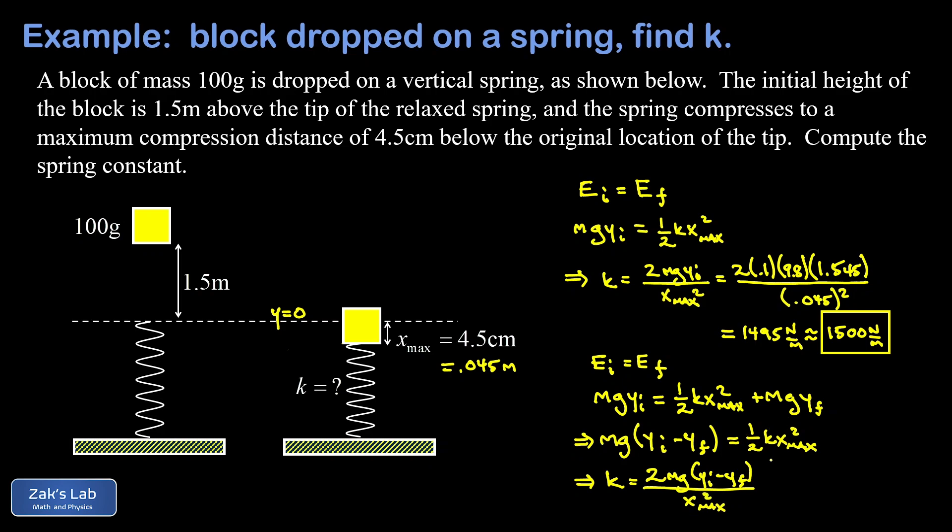When I sub the numbers in here, everything turns out the same. I have a two, a mass of 0.1, g is the same, of course, and y initial is now 1.5. And here's the double negative. I have minus y final, but y final is a negative 0.045.